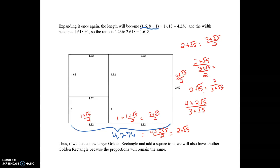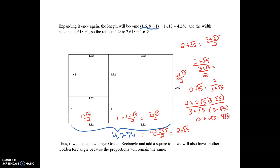To reduce this again, we multiply by the conjugate of the denominator, which is (3 − √5). When I multiply through on the top, I get 12 + 6√5 − 4√5 − 10. On the bottom, I get 9 − 5, because the middle √5 terms cancel out.